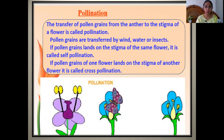Pollen grains are transferred by wind, water, or insects. So the modes of pollination can be through wind, called anemophily; through water, called hydrophily; or through insects, called zoophily.